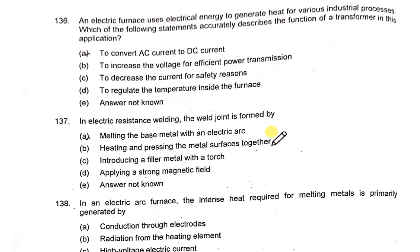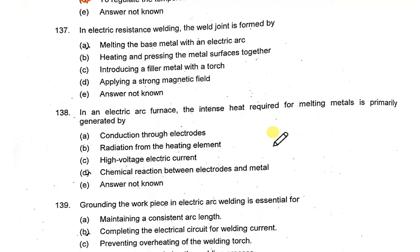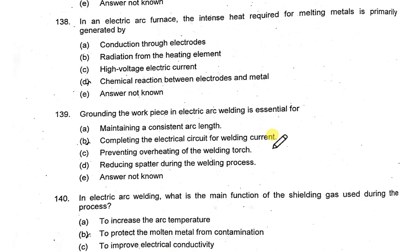In an electric furnace, the transformer is used to regulate the temperature inside the furnace. In electric resistance welding, the weld joint is formed by heating and pressing the metal surfaces together.